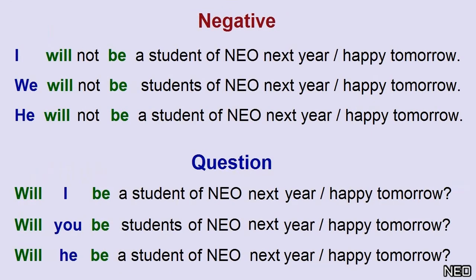Negative: I will not be a student next year. We will not be students next year. He will not be a student next year. Question: Will I be a student next year? Will you be students next year? Will he be a student next year?